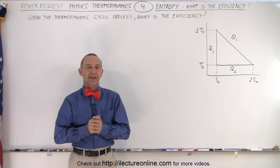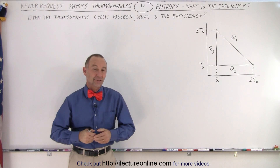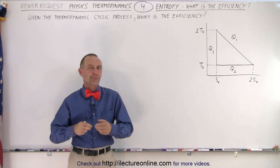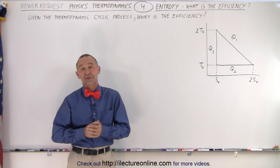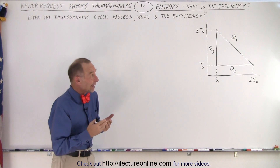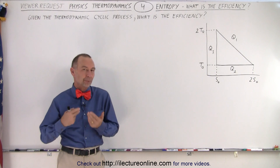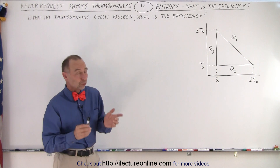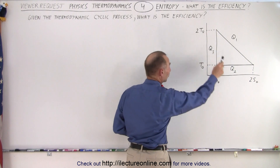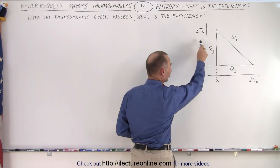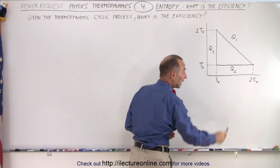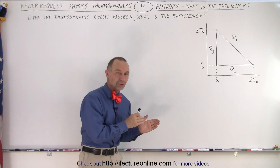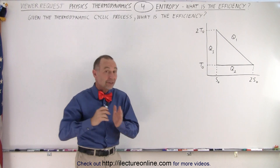Welcome to iLectroOnline. Here's another very interesting view request video on thermodynamics. In particular, they're asking us to find the efficiency of a cyclic process. What's unusual about this problem is that normally we have a P versus V diagram — a pressure versus volume diagram. In this case, we have a T versus S diagram, a temperature versus entropy diagram.